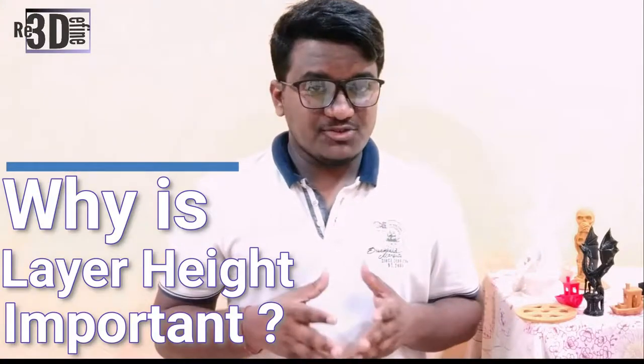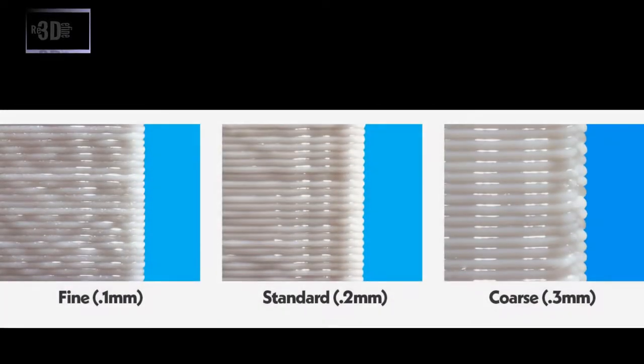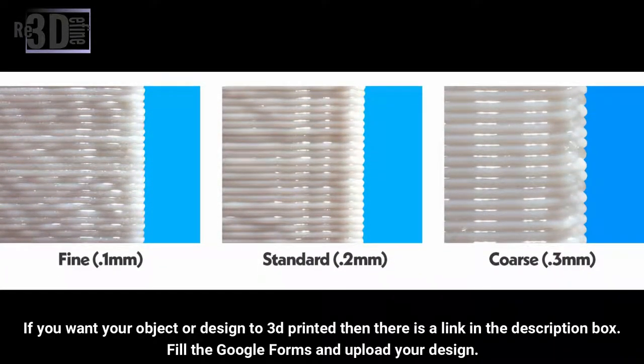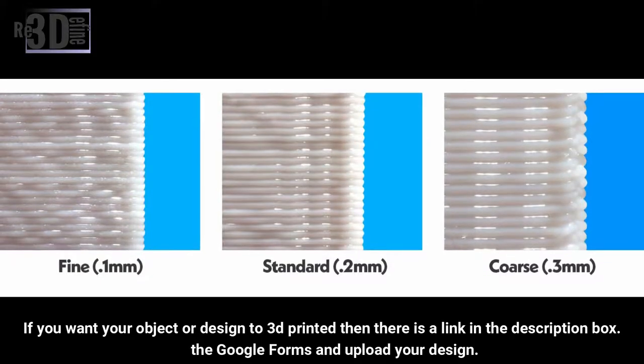So why is layer height so important? For FDM and SLA printers, layer height is an important design parameter that impacts printing time, cost, visual appearance and mechanical properties of the printed part. Often, the visual difference between parts printed at 100 µm and 200 µm is very small. However, parts printed at 100 µm will take twice as long to print, increasing cost and time.